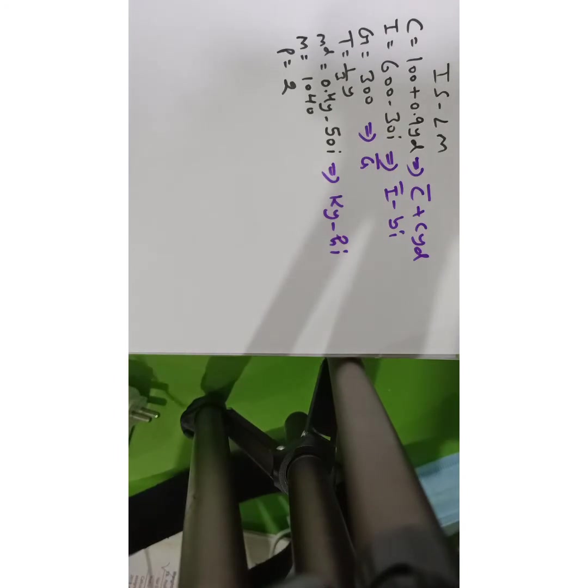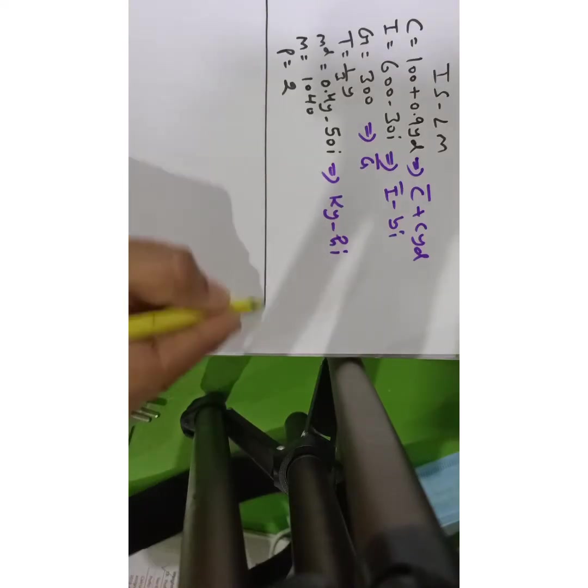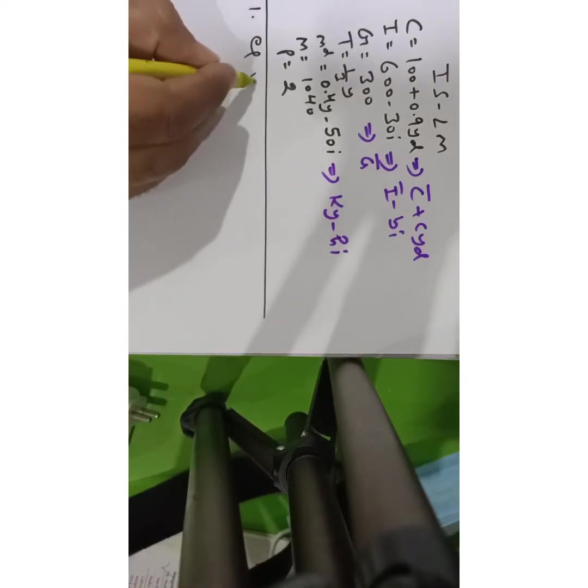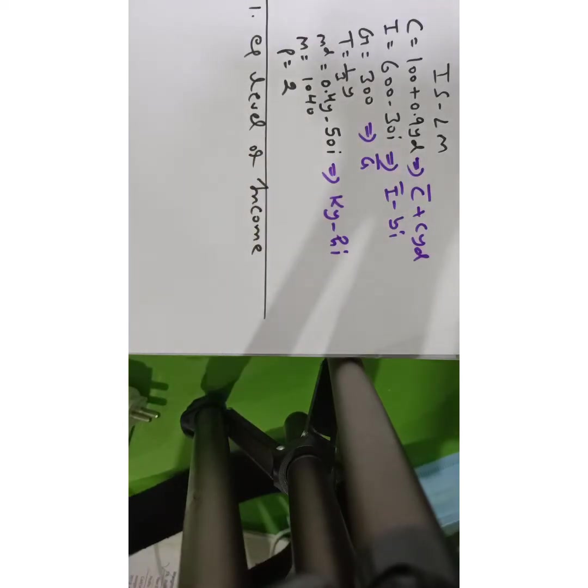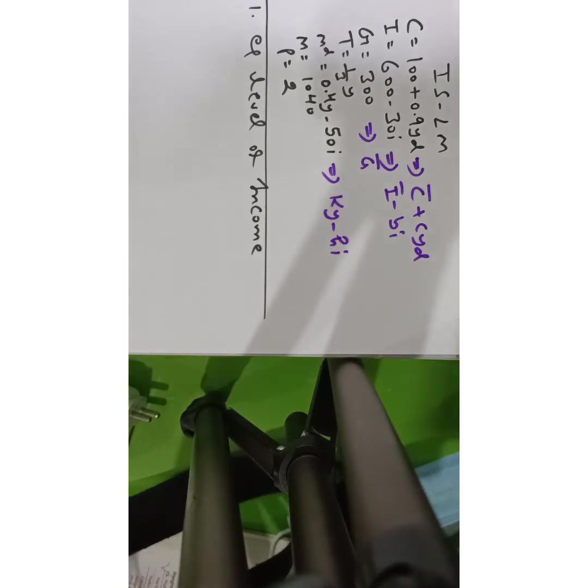Suppose the question says calculate the equilibrium level of income — that is, we need to solve for equilibrium level of income given this information. In order to solve equilibrium level of income, you must understand that equilibrium income occurs where both the goods market and money market are in equilibrium.